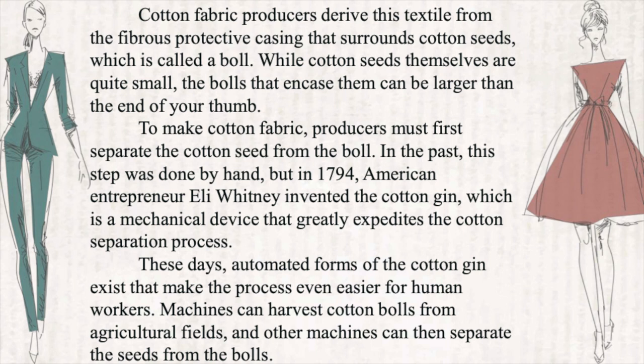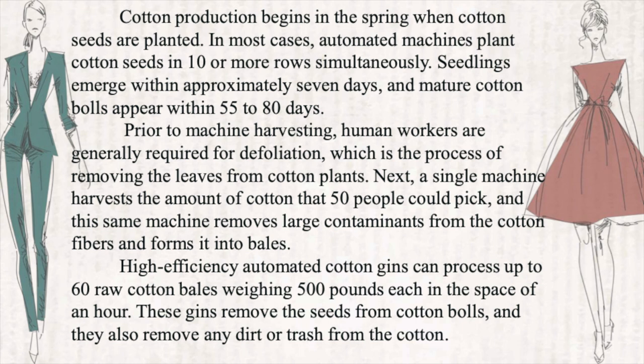Cotton production begins in the spring, where in most cases automated machines plant cotton seeds in 10 or more rows simultaneously. Seedlings emerge within approximately seven days and mature cotton bolls appear within 55 to 80 days. Prior to machine harvesting, human workers are generally required for defoliation, which is the process of removing the leaves from cotton plants. A single machine then harvests the amount of cotton that 50 people could pick, and removes larger contaminations from the cotton fibers, forming it into bales.